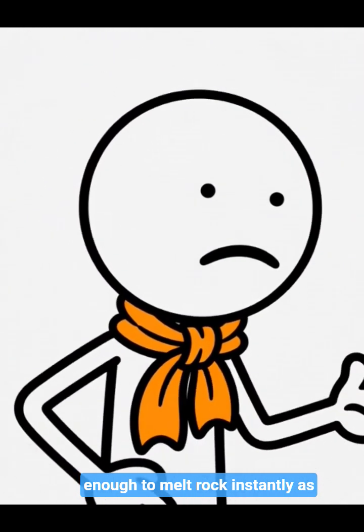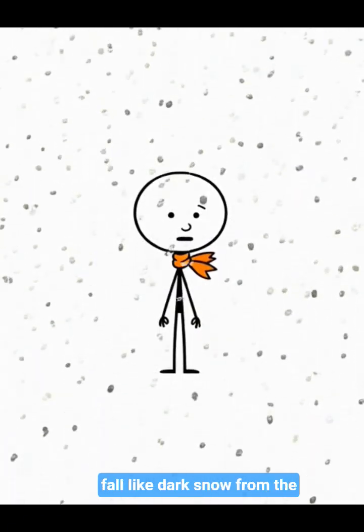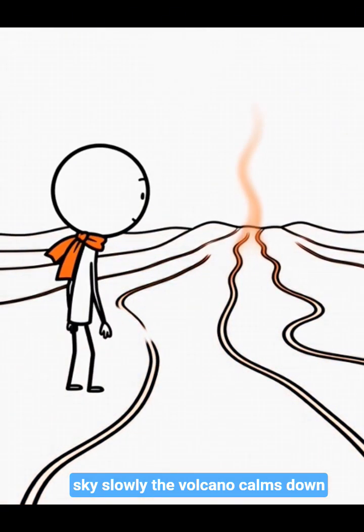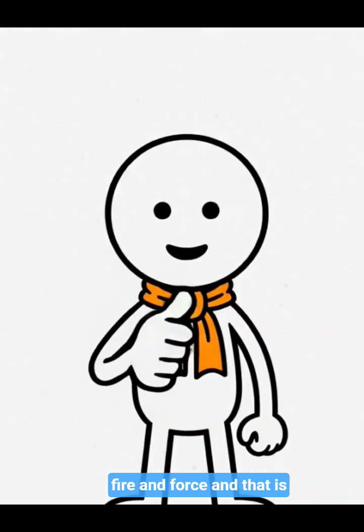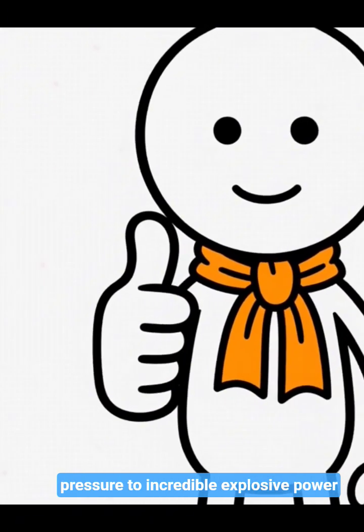As the eruption weakens, ash begins to fall like dark snow from the sky. Slowly, the volcano calms down, leaving behind a landscape shaped by fire and force. And that is how a volcano erupts, from deep pressure to incredible explosive power.